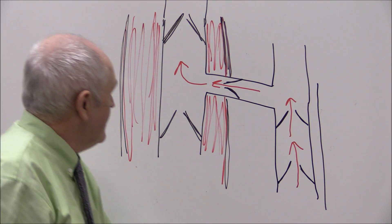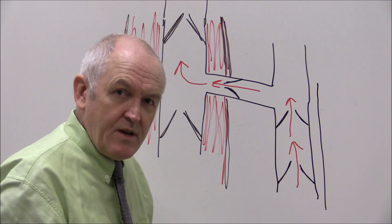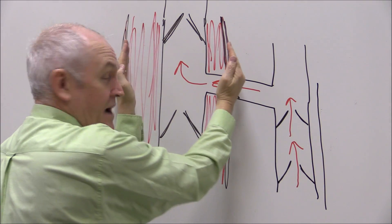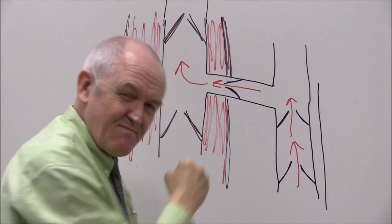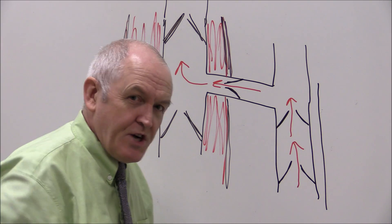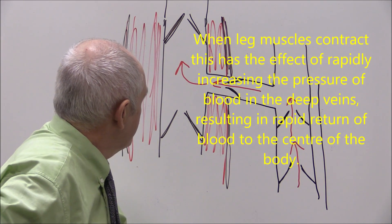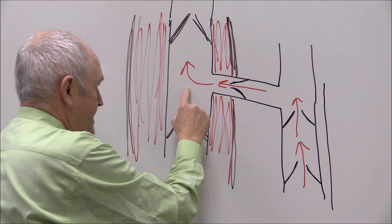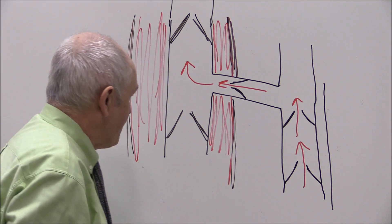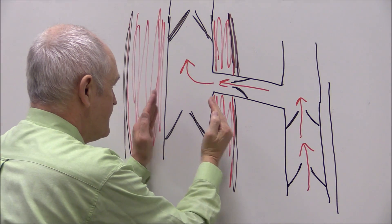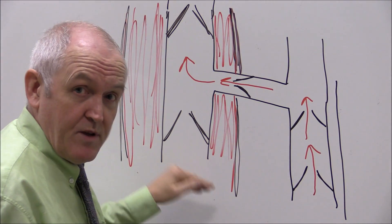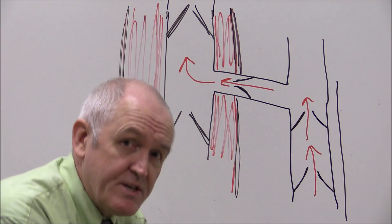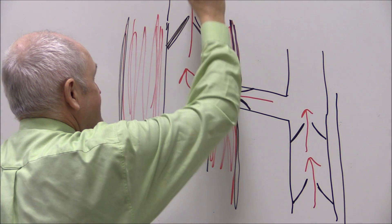When the muscle contracts — for example the calf muscle during walking — it squeezes the deep vein very hard, slamming it nearly shut. The vigorous muscle contraction greatly increases the pressure inside that compartment of the deep vein. When the pressure increases, the valve below immediately closes, preventing regurgitation of blood back to the periphery, while the valve above opens.